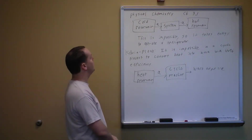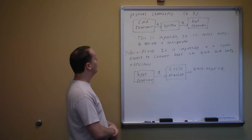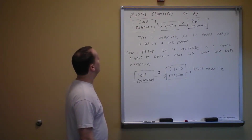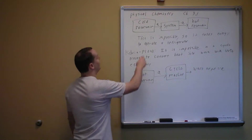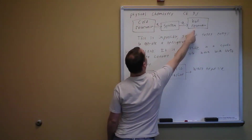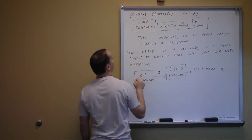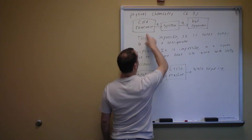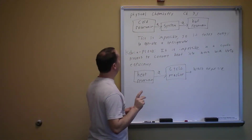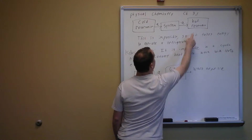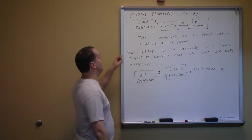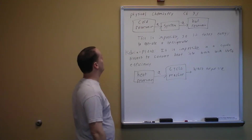The Clausius Statement says: if we have a system connected to two reservoirs, one with higher temperature than the other, it is impossible to have no other effect than to pump heat from the cold reservoir to the hot reservoir. This is why it actually takes energy, such as electricity, to operate a refrigerator.